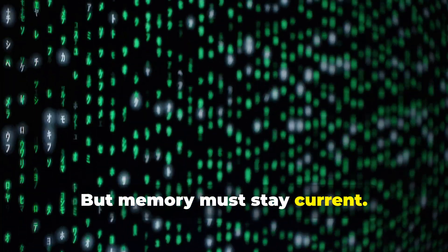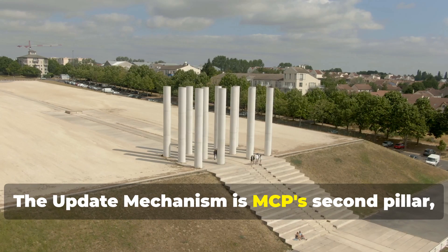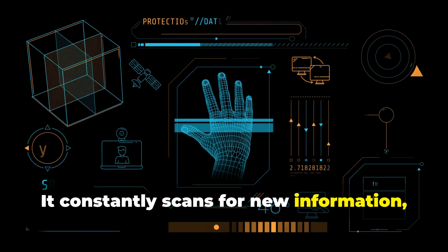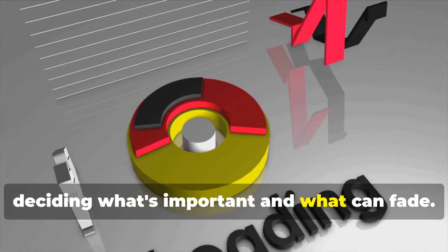But memory must stay current. The update mechanism is MCP's second pillar, keeping the context store fresh and relevant. It constantly scans for new information, deciding what's important and what can fade.